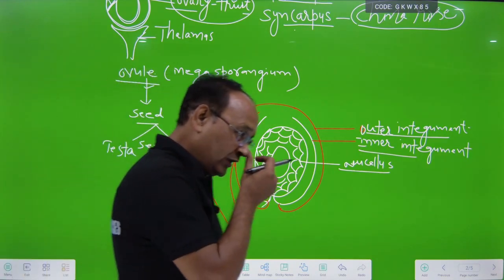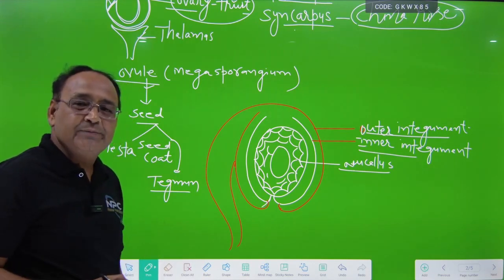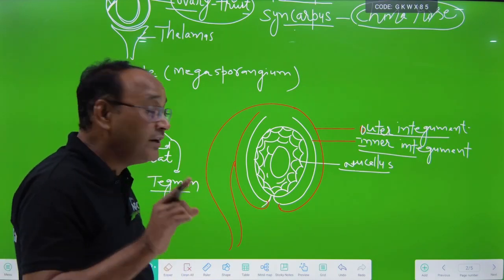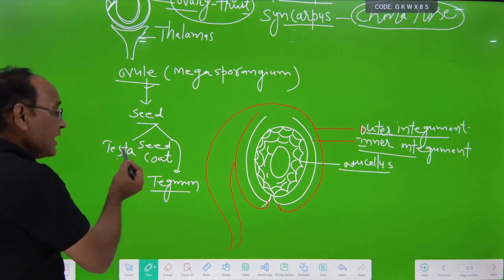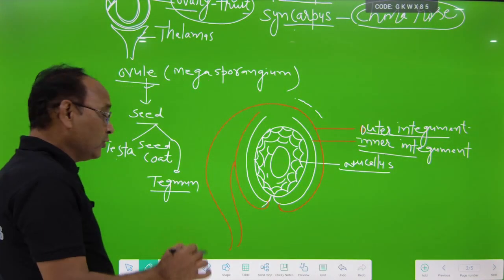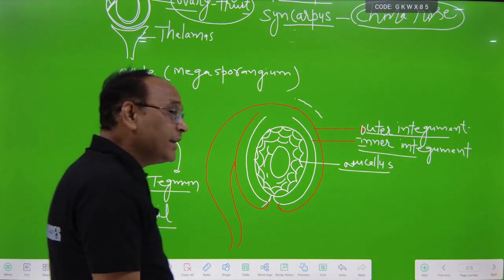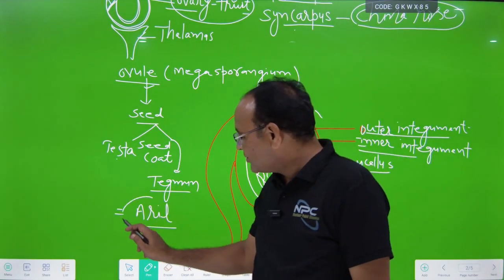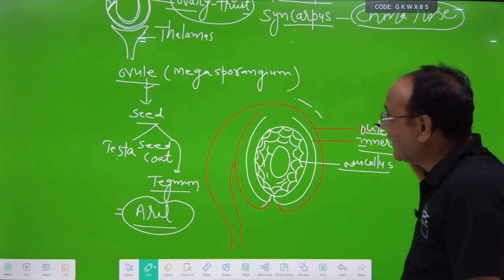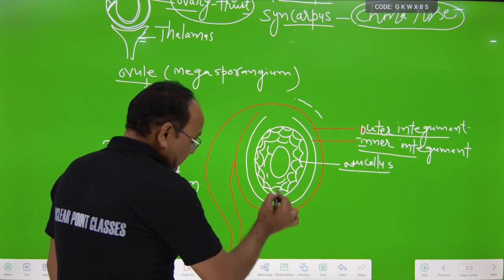Now, especially in lychee, there are three integuments present. In addition to testa and tegmen, another outermost layer is present, and it converts into a fleshy structure which is called aril. So especially in lychee, the edible part is aril, and aril is a modification of the third integument — this is a special character of lychee.